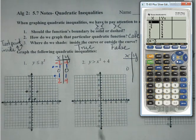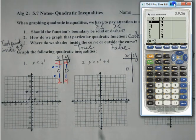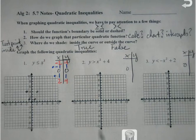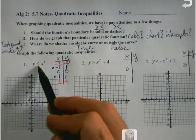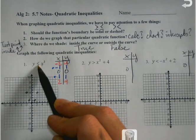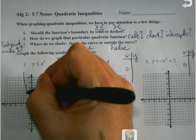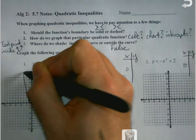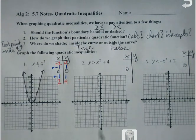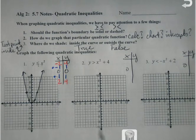Once I plot them, I have to stop for a second. Remember, this time we've got to figure out if I'm using a solid or a dotted line. This time I see they are equal to, so it's going to be solid. I'm basically going to connect the dots like I normally would. But since it's not just equals, I've got to shade something.